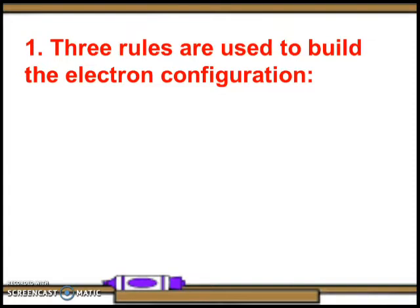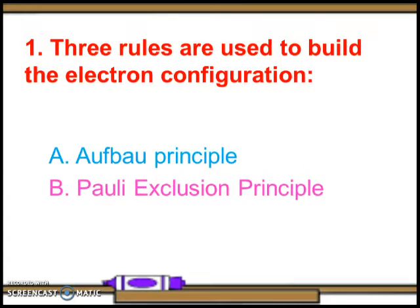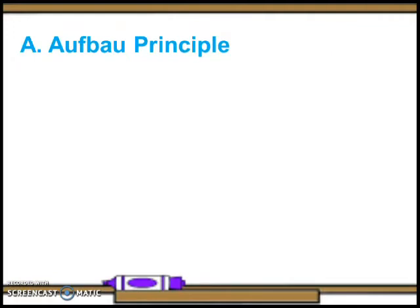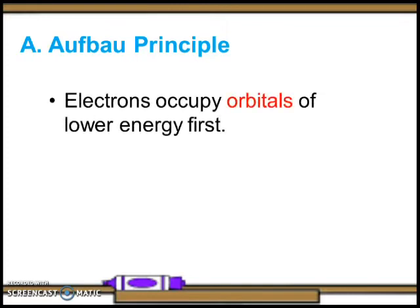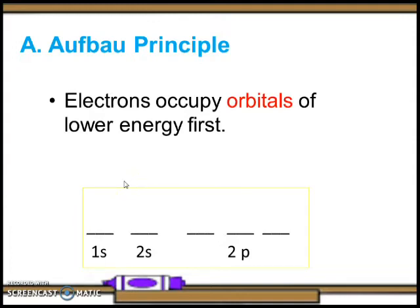Three rules are used to build electron configurations: the Aufbau principle, the Pauli exclusion principle, and Hund's rule. The Aufbau principle, developed by Niels Bohr, states that electrons occupy orbitals of lower energy first. The Aufbau principle — from the German meaning 'building up' — describes a model where an atom is built up progressively by adding electrons to the most stable shells. In the orbital diagram, each box represents an atomic orbital.